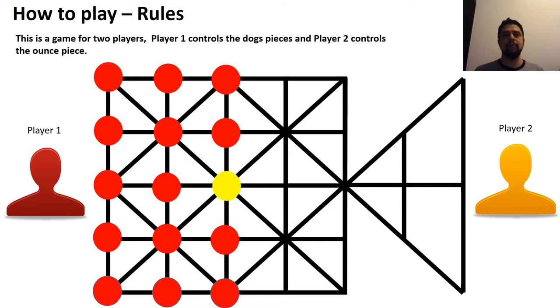The rules with a graphic representation. This is the board game. The pieces of board game. This side with the triangle will stay the player two, the ounce player. And the trace, the side with the square side will stay player one.